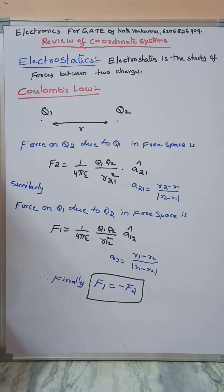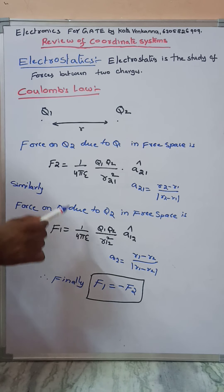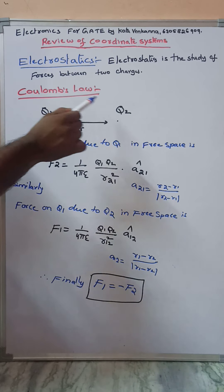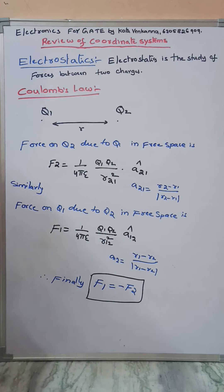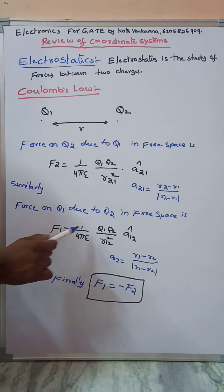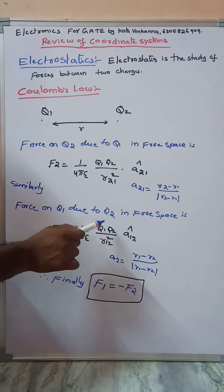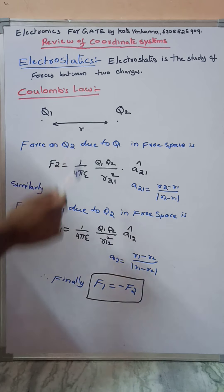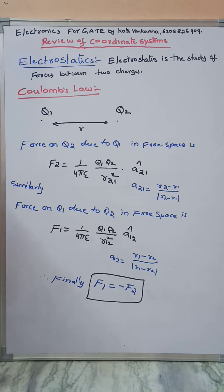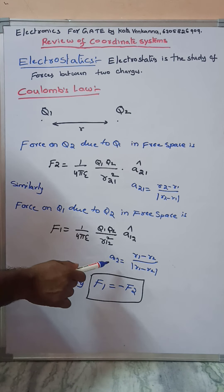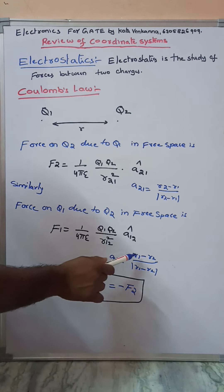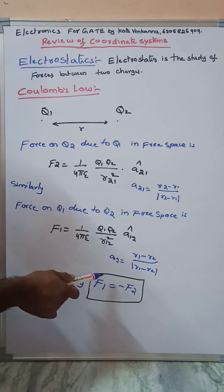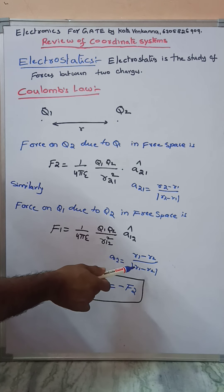Similarly, the force on Q1 due to Q2 in free space is denoted F1. F1 equals 1 over 4 pi epsilon times Q1 Q2 divided by R12 squared, times A12. A12 is written as R1 minus R2 divided by the modulus of R1 minus R2.